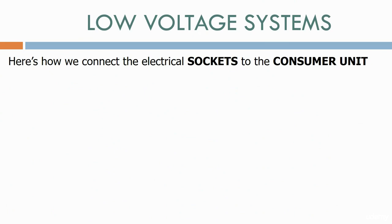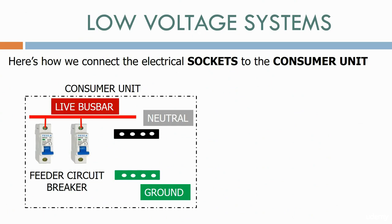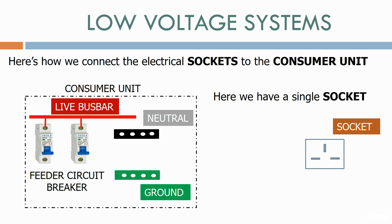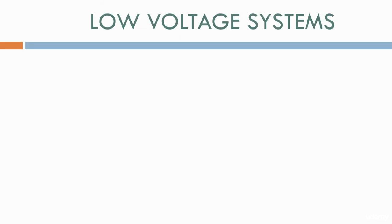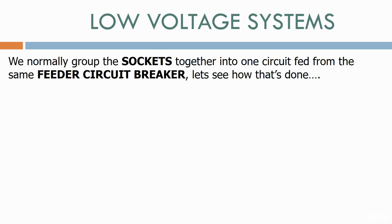Here's how we connect the electrical sockets to the consumer unit. We have the consumer unit with feeder circuit breakers, a neutral terminal strip, a ground terminal strip and a live bus bar. Here we have a single socket — a 3-pin socket with a live, neutral and ground. We connect the live feed from the circuit breaker through the cable onto the socket, then a neutral feed from the neutral terminal strip, and finally the ground wire from the ground terminal strip through to the socket. We normally group the sockets together into one circuit, fed from the same feeder circuit breaker.